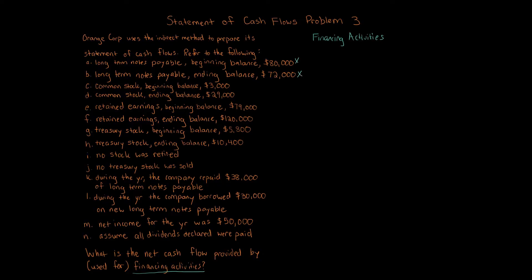So items A and B — the beginning and ending balances — are irrelevant and we can cross them out. Looking at K: during the year, the company repaid $38,000 of long-term notes payable. Repaying notes payable is a cash outflow of $38,000, because when you owe money and pay it off, you're paying with cash. K is now eliminated.